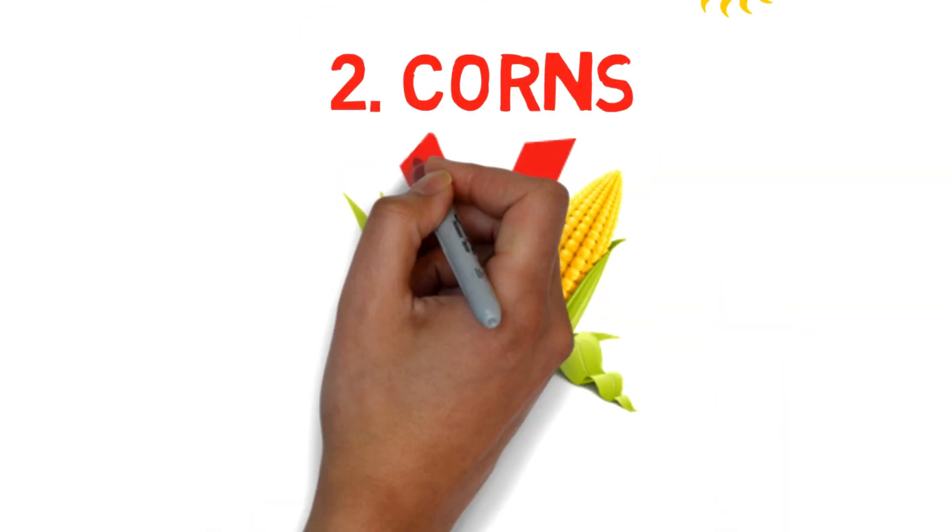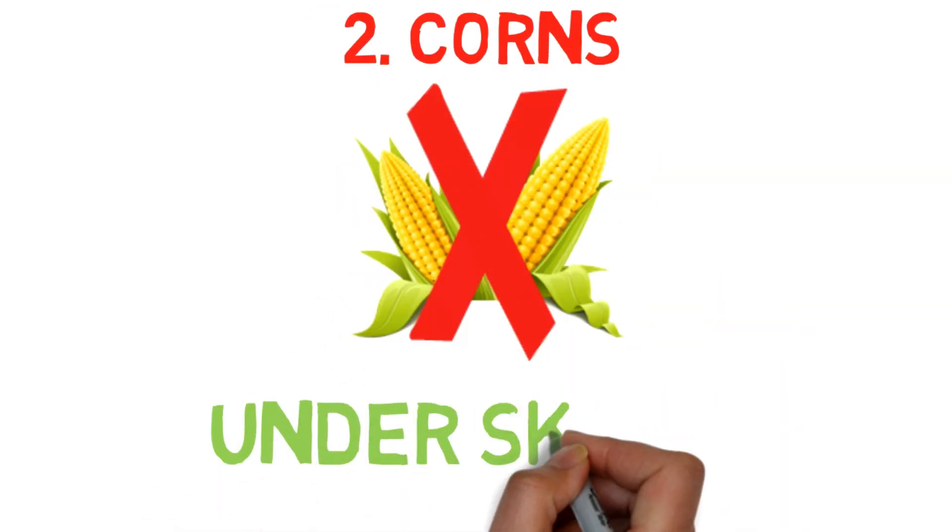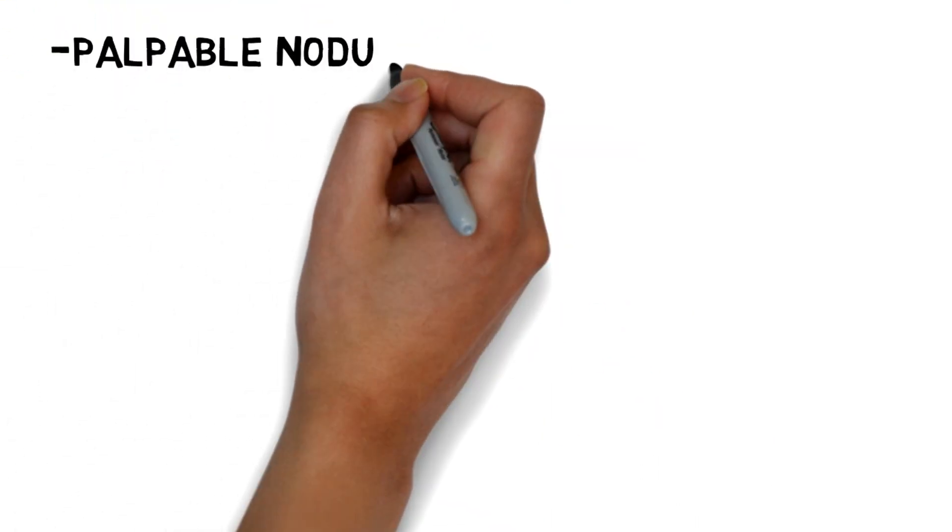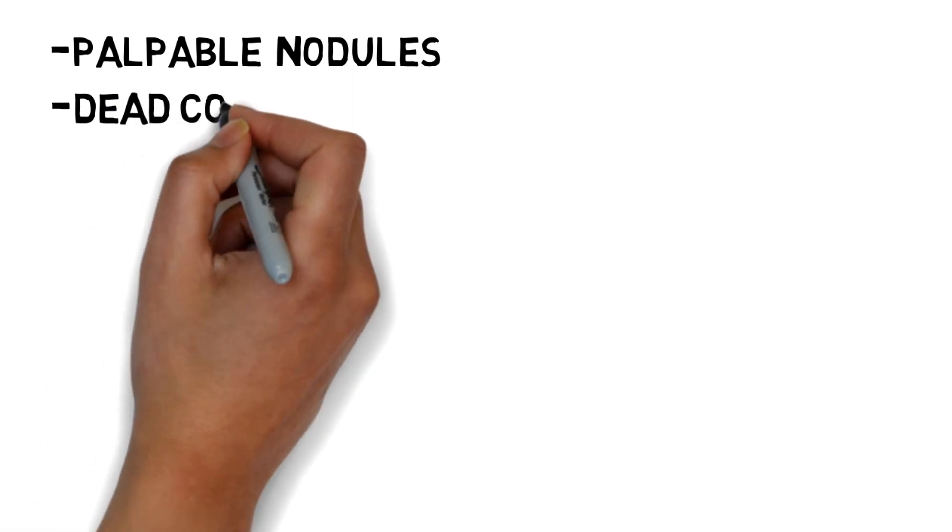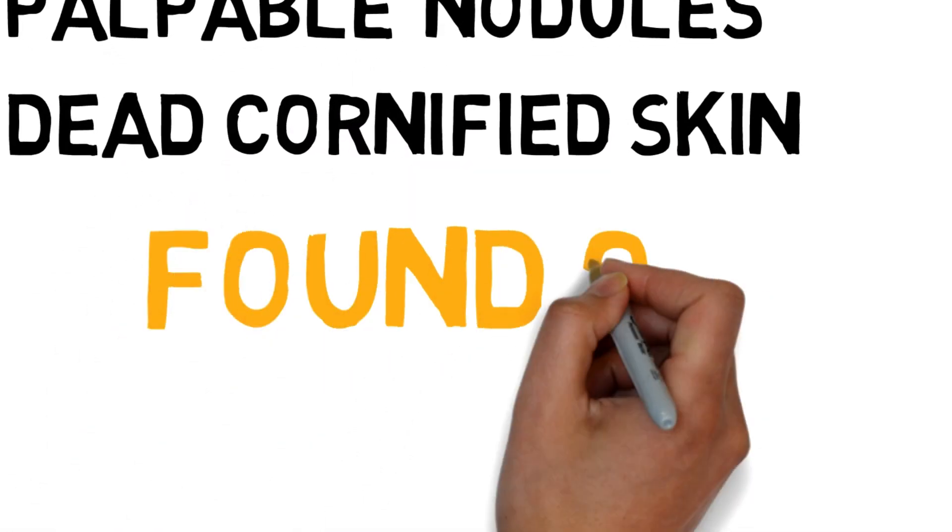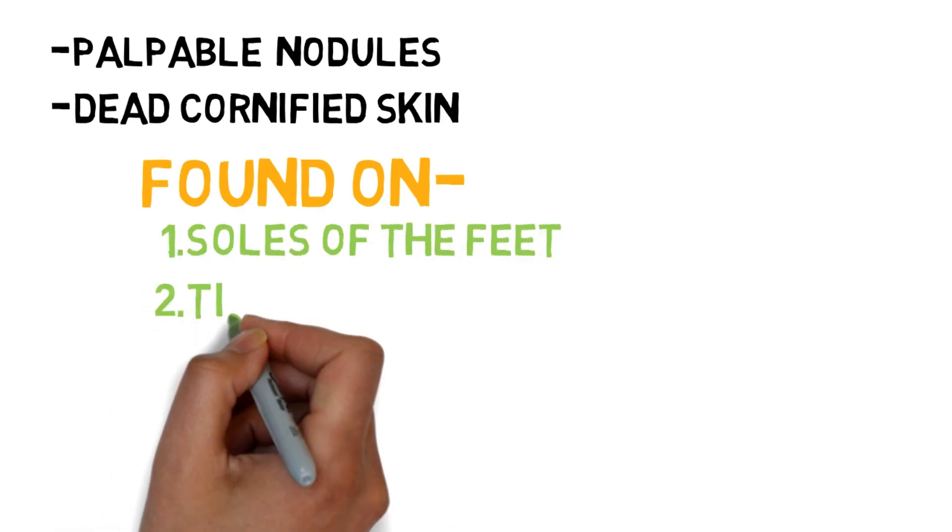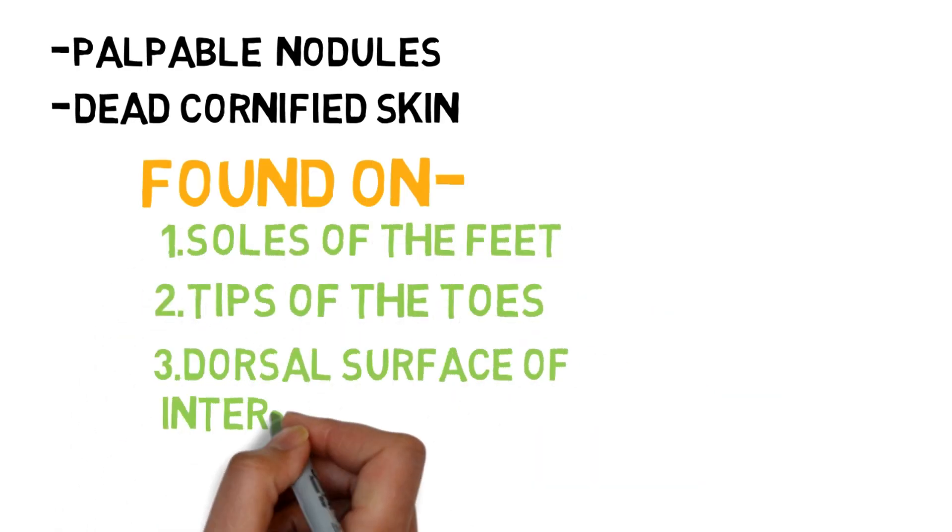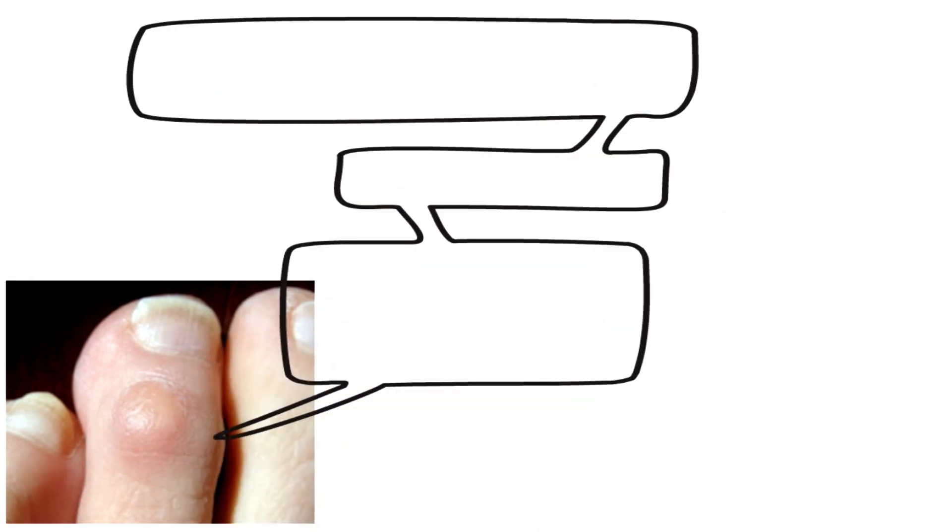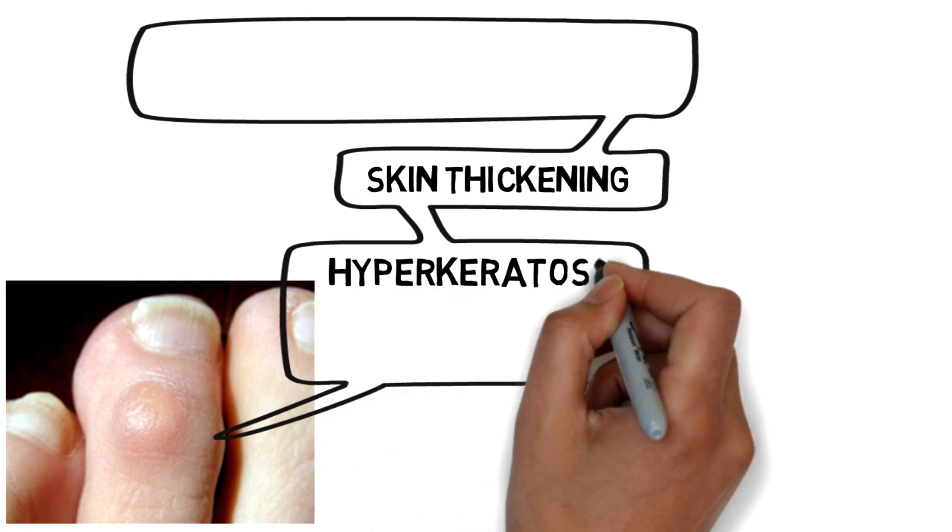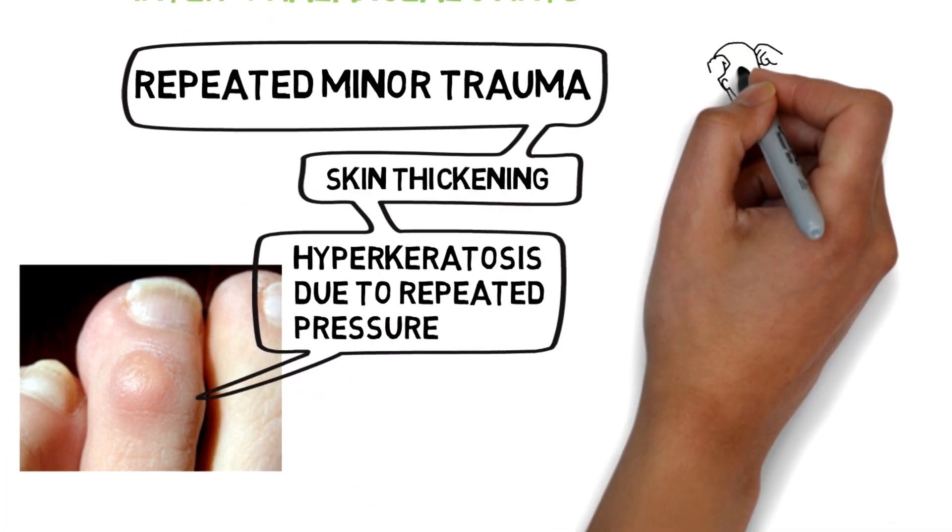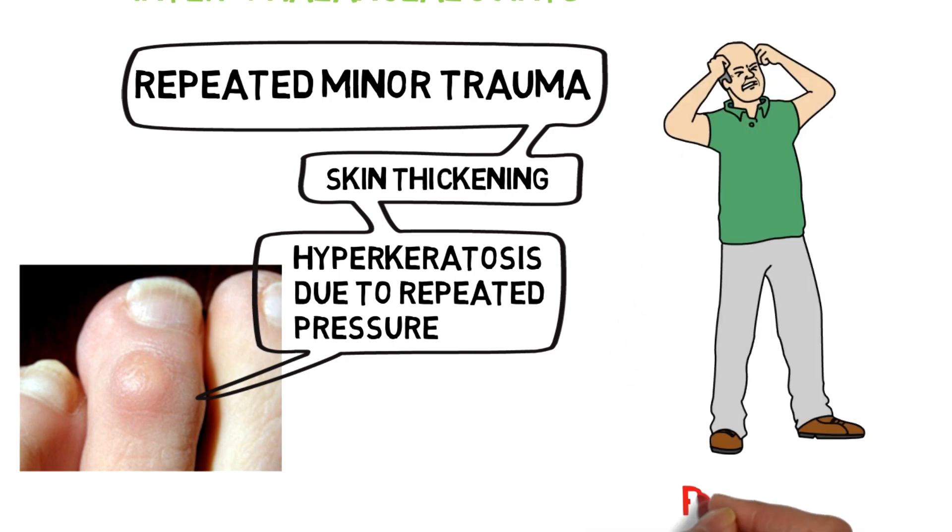Our next topic is corns—not the corns that you eat, but corns under the skin. Corns are palpable nodules with a central yellow color of dead keratified skin. They are commonly found on soles of feet, tips of toes, and dorsal surface of interphalangeal joints. The formation of corn is well known—they are areas of skin thickening and hyperkeratosis produced due to pressure and repeated minor traumas. As corns are pushed into the skin, they cause pain sometimes.